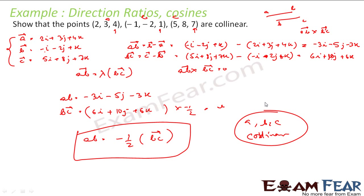The other way is to use the cross product, but I do not want to use that because it needs a lot of calculation, and I can prove it this way more easily. If you are not understanding properly, you can watch the vector chapter where we spent more time on these concepts. Here the concepts are all the same — the only extra thing is the k component added to make it 3D.